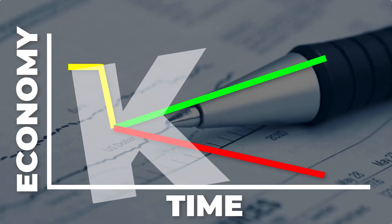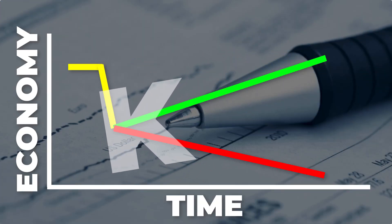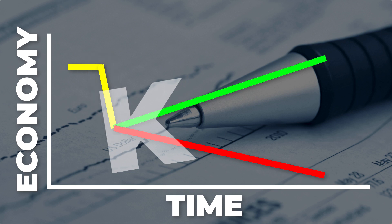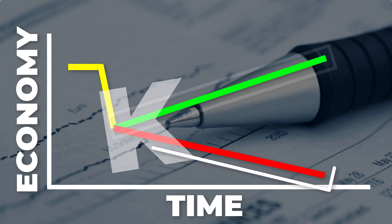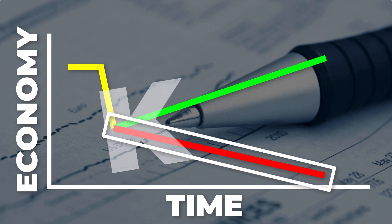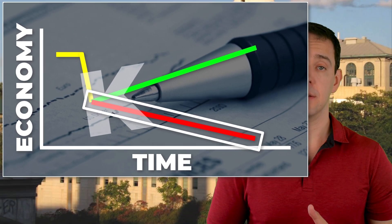In its simplest form, a K-shaped recovery means that after some kind of economic downturn, the ultimate recovery happens for some people — that's the upper part of the K — but far less so, or not at all, for other people — that's the bottom part of the K.